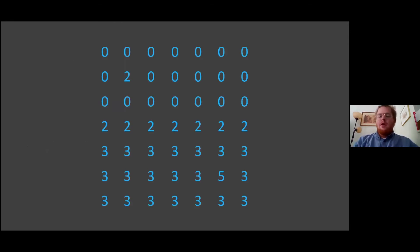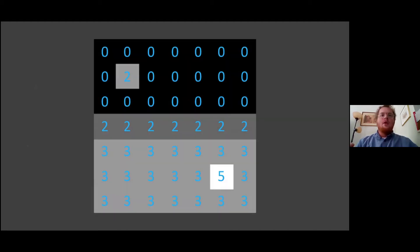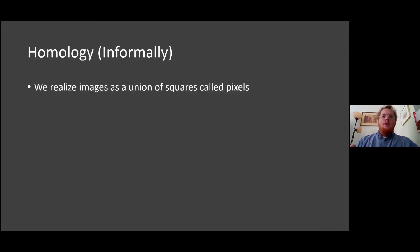Images are arrays of numbers that we visualize by assigning colors based on the numbers in the array. For grayscale images, lower numbers correspond to darker colors and higher numbers correspond to lighter colors — shades of gray. From a topology standpoint, we tend to realize images as unions of squares called pixels.